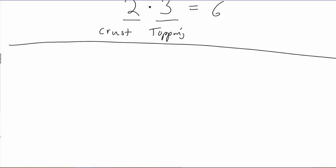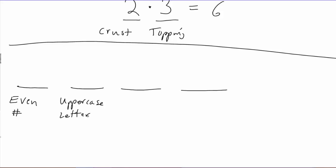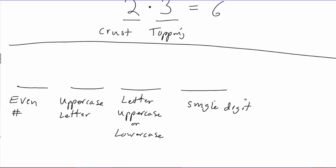Consider the following kind of problem: suppose we're going to come up with a password involving a string of four symbols. The first symbol is a numeral — a single digit required to be even. The next symbol has to be an uppercase letter. The third symbol has to be a letter, either uppercase or lowercase. And finally, the last symbol has to be a single digit — any single digit, not necessarily even. What is the total number of possibilities for such passwords?